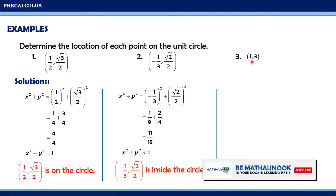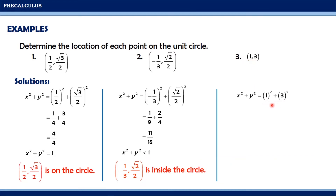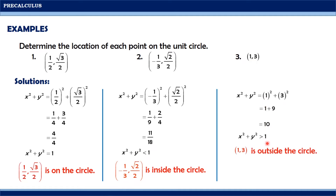Finally, for our last given, we have the point (1, 3). Substitute 1 and 3 into our equation; we will have 1 squared plus 3 squared, which gives us 1 plus 9. Adding 1 and 9 equals 10. Notice that the value 10 is greater than 1. Since the value of x squared plus y squared is greater than 1, it follows that the point (1, 3) is outside the circle.